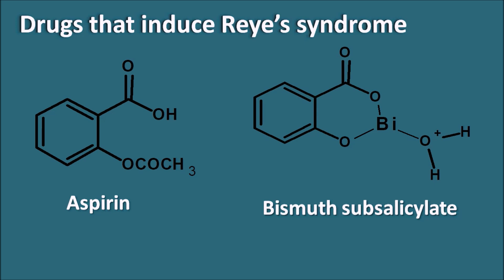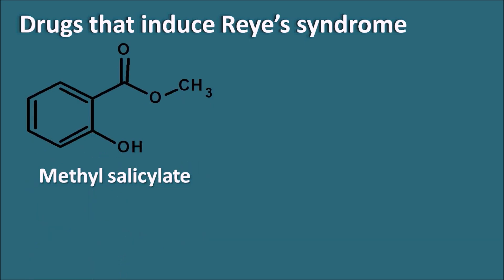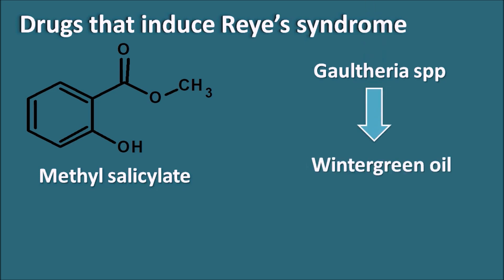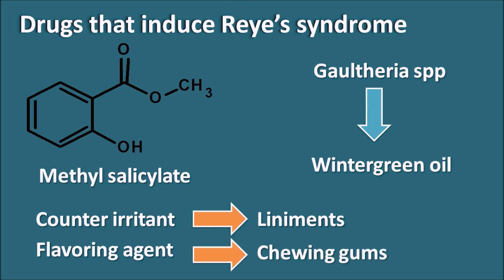Bismuth subsalicylate is used to treat peptic ulcers, and when given to children or teenagers suffering with viral infections, it may precipitate Reye's Syndrome. Another drug is methyl salicylate, which is the methyl ester of salicylic acid. It is found in natural species like Gaultheria, from which wintergreen oil is extracted — an oil rich in methyl salicylate. Methyl salicylate acts as a counter-irritant used in liniments and as a flavoring agent in chewing gums. When consumed, it can also produce Reye's Syndrome.